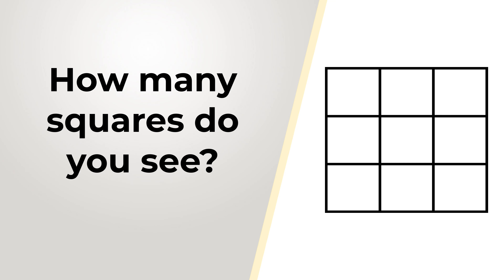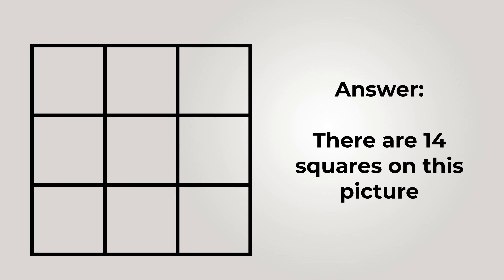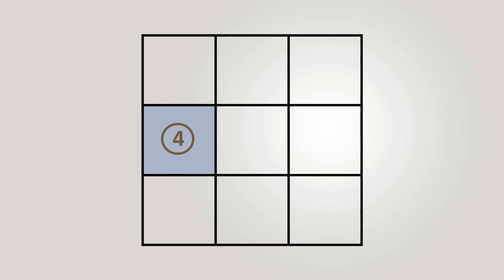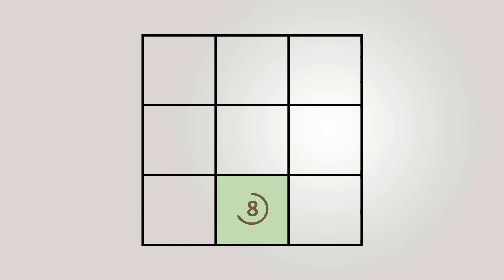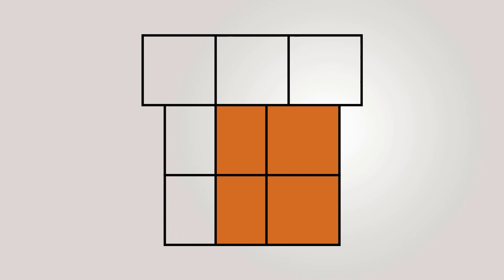Let's solve this challenge together. There are 14 squares that can be identified in this picture. Let me draw them for you. There are nine small squares: one, two, three, four, five, six, seven, eight, and nine. Now let's look at the medium-sized squares — there are four of them: number 10, number 11, number 12, and number 13. And then there is one large square — number 14.